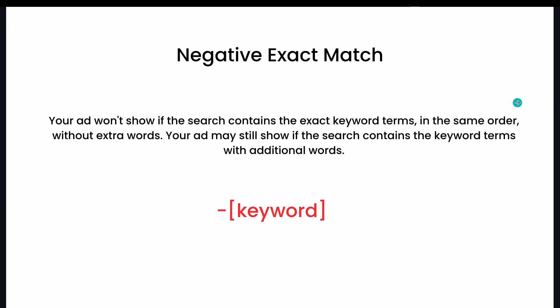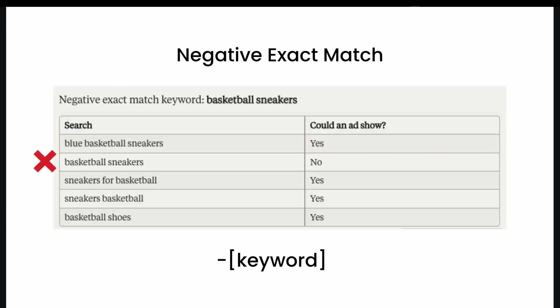Let's define what negative exact match is. Your ad won't show if the search contains the exact keyword terms in the same order without extra words. Your ad may still show if the search contains the keyword terms with additional words. For example, if you input the negative exact match keyword for 'basketball sneakers,' the only search term you'd be preventing is exactly that — 'basketball sneakers.' So 'blue basketball sneakers,' 'sneakers for basketball,' 'sneakers basketball,' and 'basketball shoes' would all still trigger your ad. Only the exact term 'basketball sneakers' is blocked.